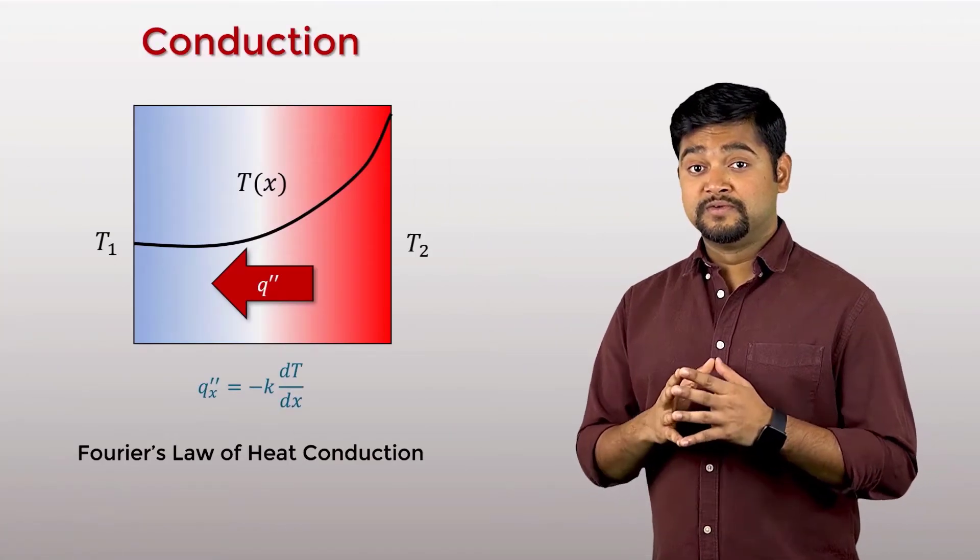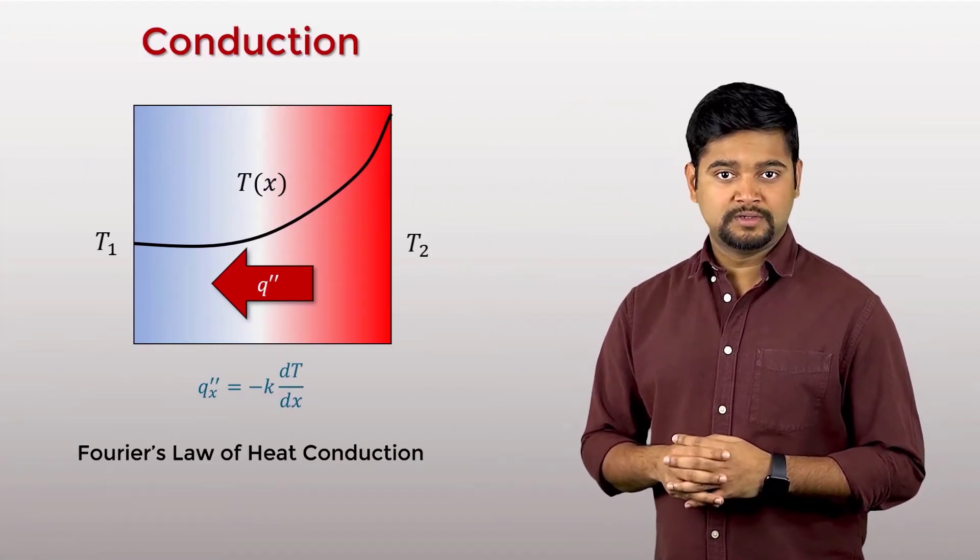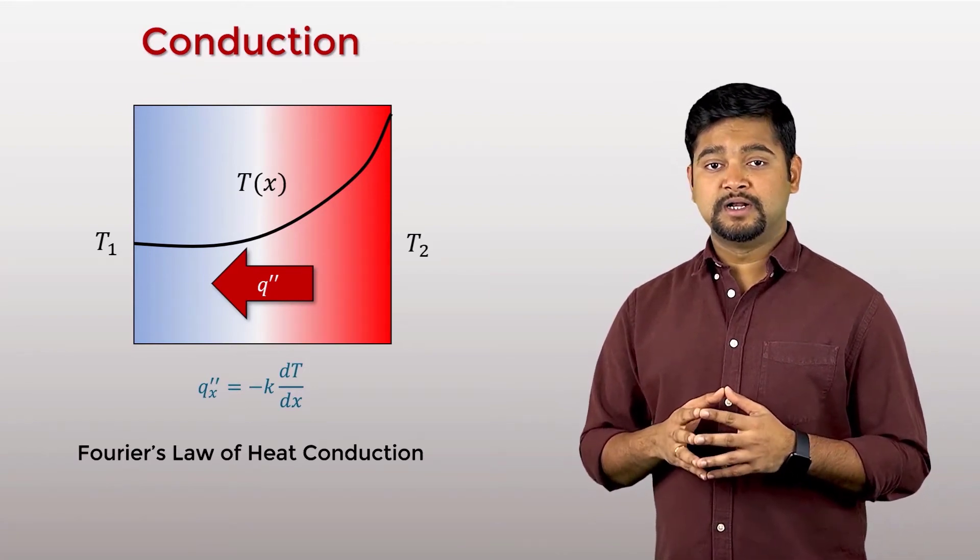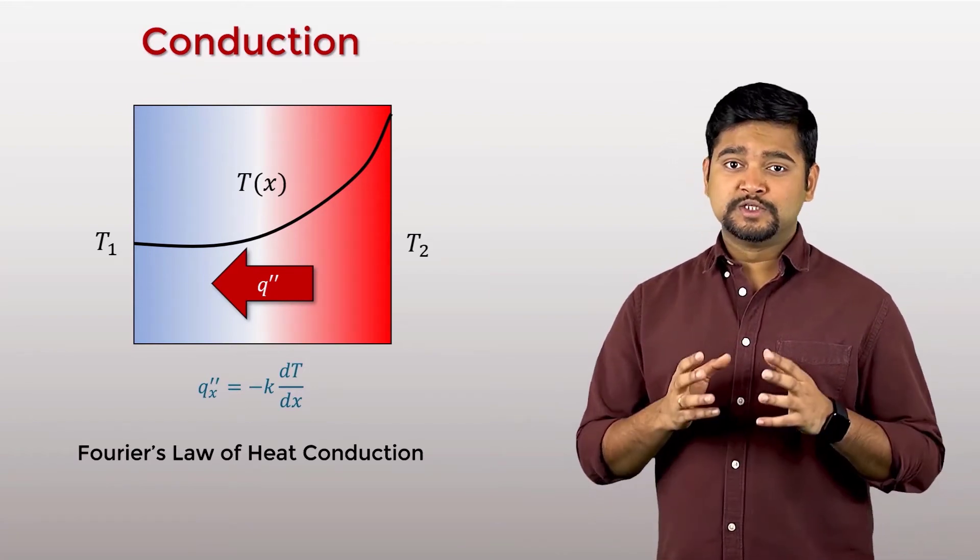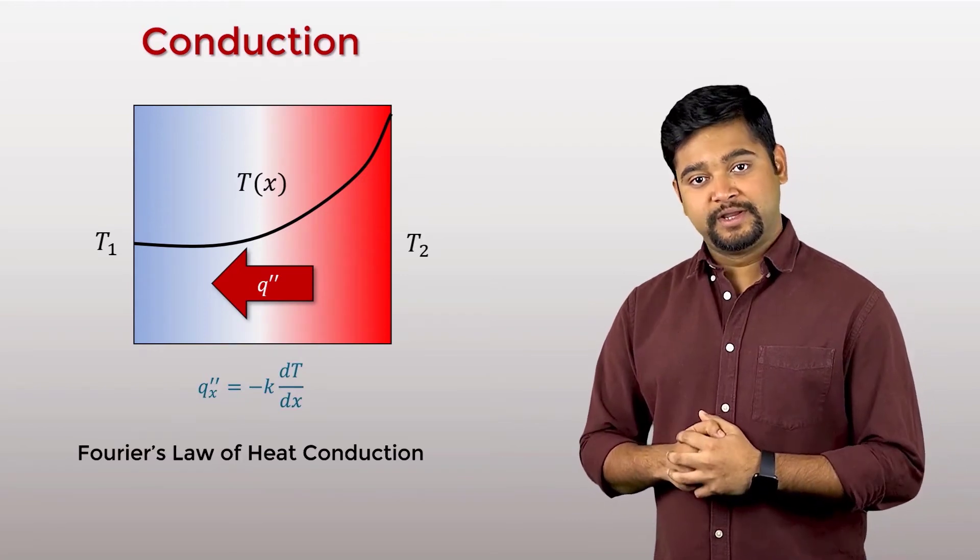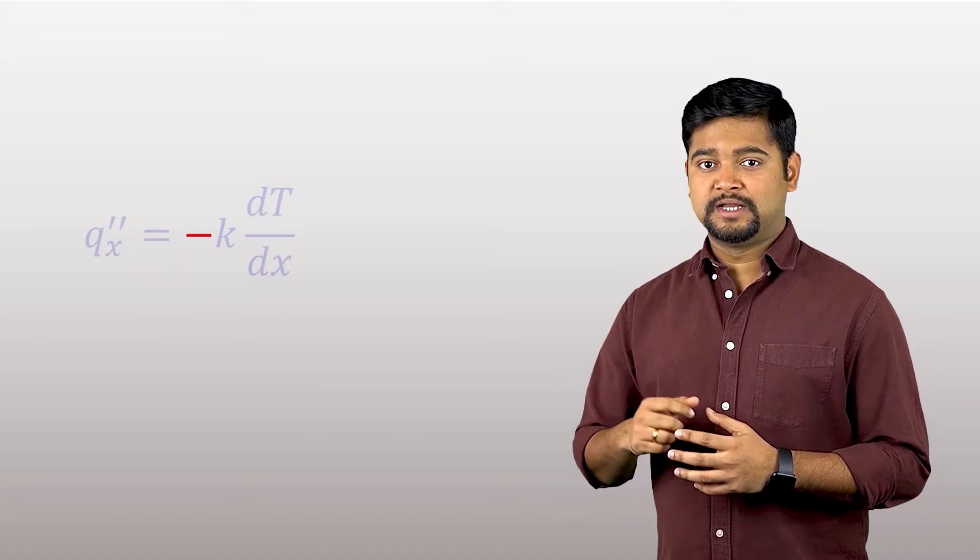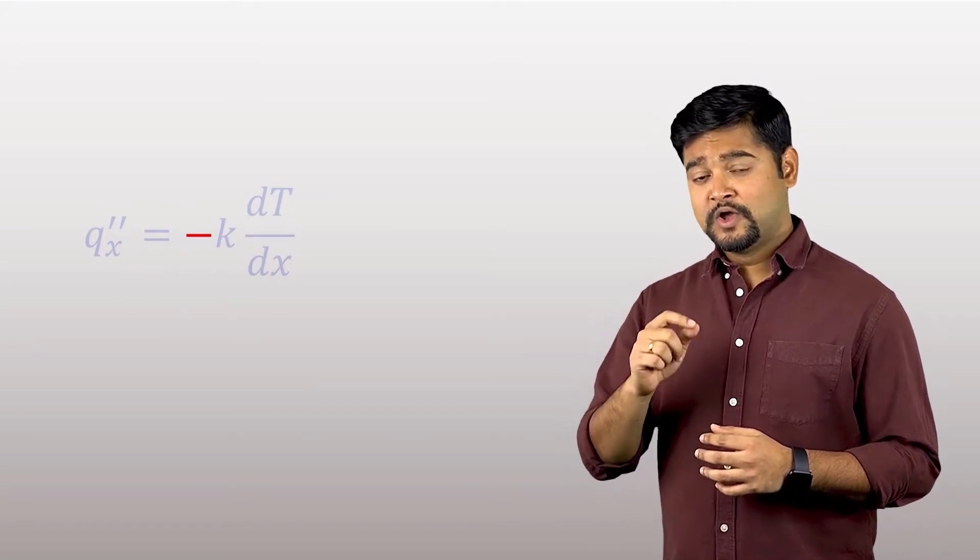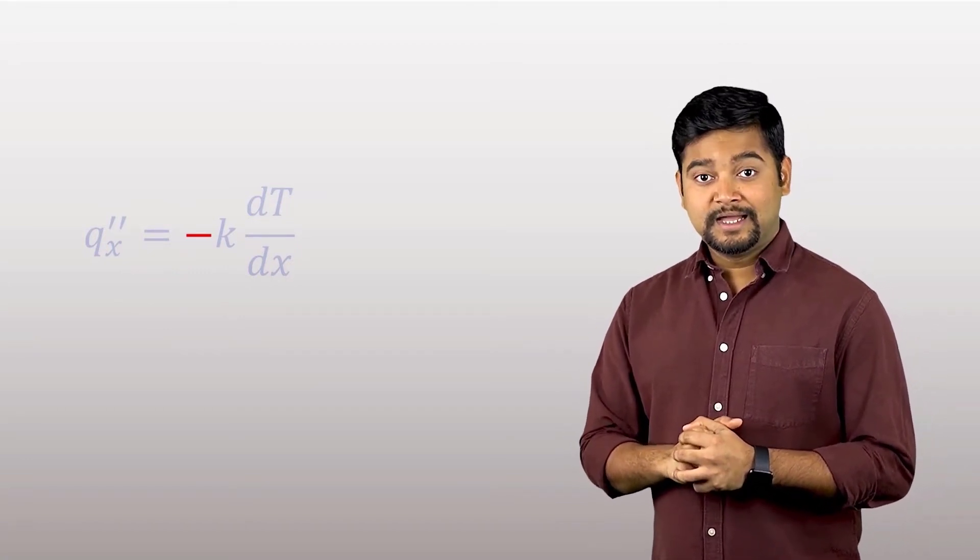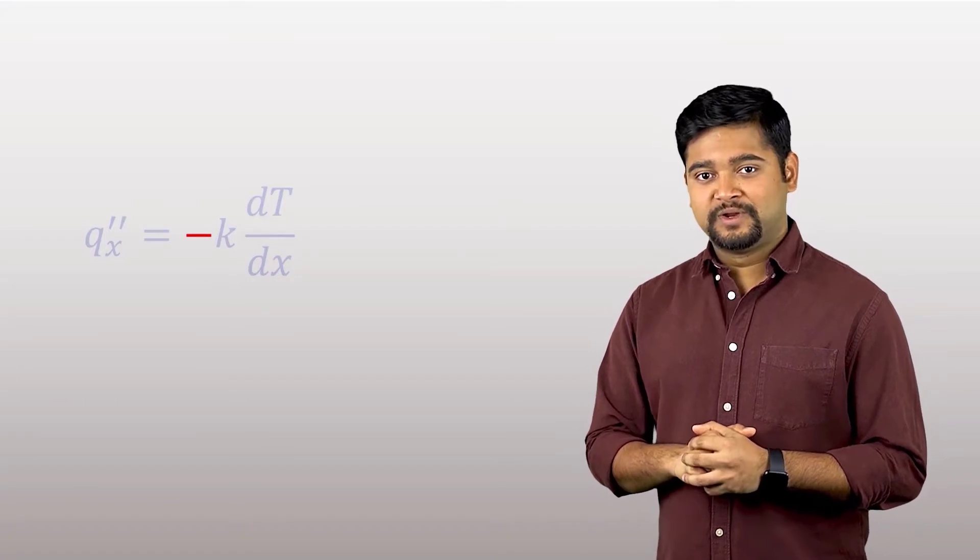This is Fourier's law of heat conduction, which states that the heat flux resulting from thermal conduction is proportional to the temperature gradient. The negative sign is due to the fact that heat transfer is in the direction of decreasing temperature, i.e., opposite to the positive gradient.